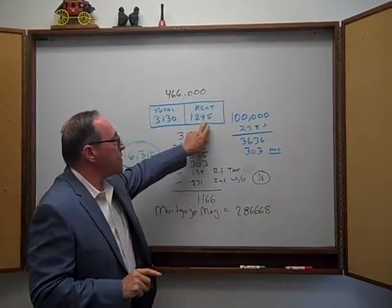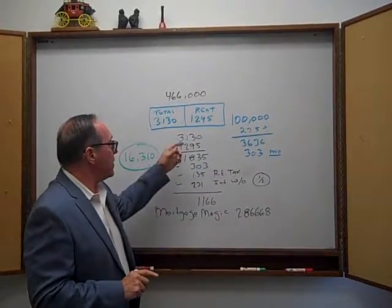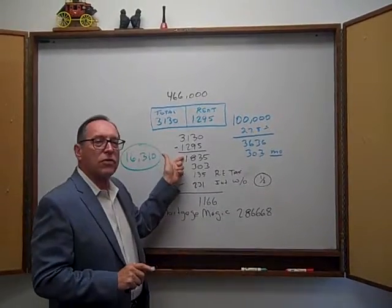The renter on the other side of the duplex pays $1,295. So if you take $3,030 minus $1,295, now you're down to $1,735.